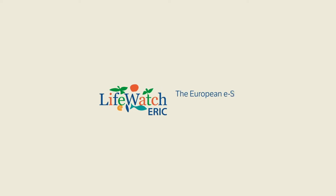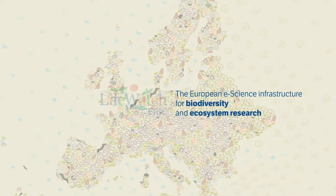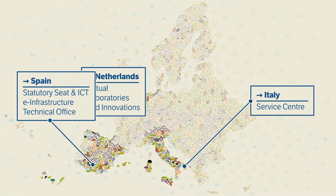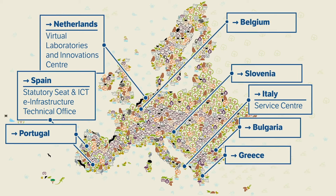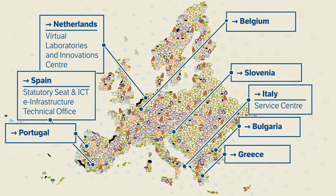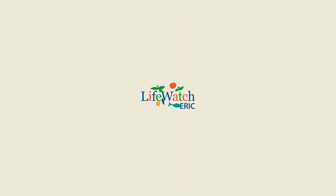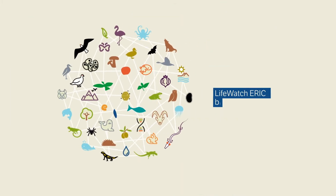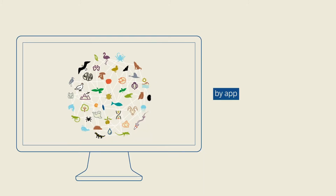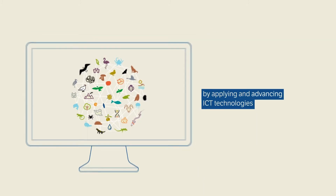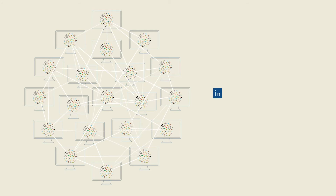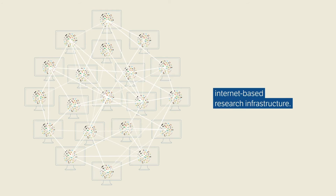LifeWatch ERIC is the European e-science infrastructure for biodiversity and ecosystems research, with common facilities located in Spain, Italy and the Netherlands, and national distributed centres in its member countries. LifeWatch ERIC is Europe's first line of response to biodiversity loss by applying and advancing ICT technologies and interconnecting scientific communities into its internet-based research infrastructure.